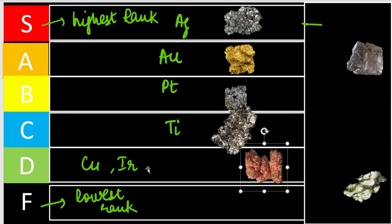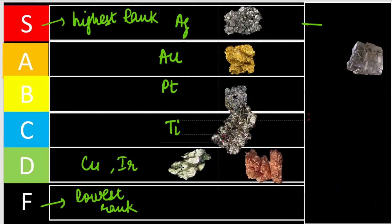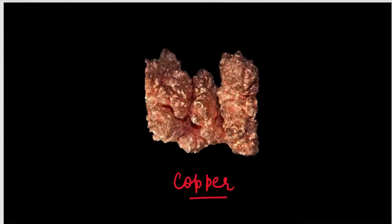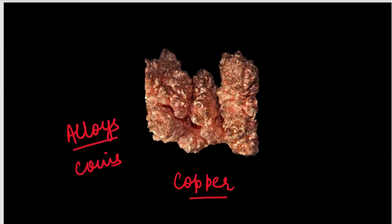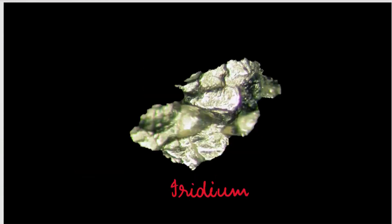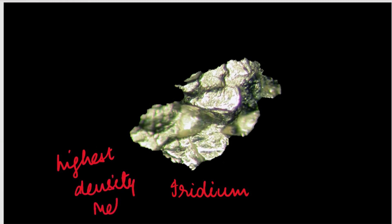Copper is a very commonly used element — it is used in a lot of alloys and also in coins. If we talk about iridium, it is the highest density metal.